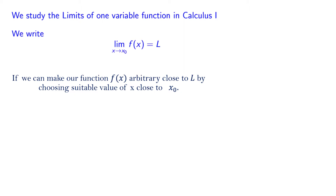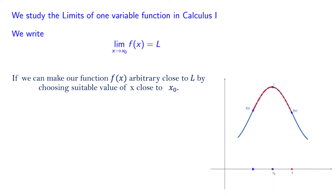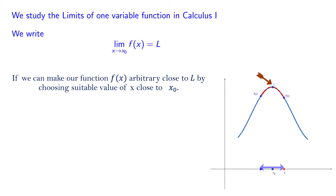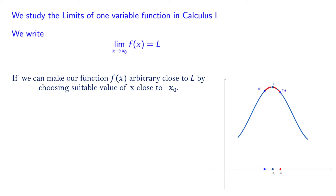Let's look at this picture. One can see as x approaches to x₀, either from left or right, the corresponding value of f is getting closer and closer to L. In other words, when the distance between x and x₀ is getting small, the corresponding distance between f and L is also getting small.